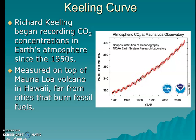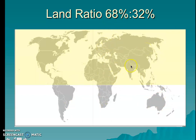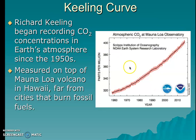Carbon dioxide levels, as Keeling found, were actually decreasing in the spring and summer months, and then increasing during the fall and winter months. We think this is happening because of the Northern Hemisphere and Southern Hemisphere land ratio — 68% of the Earth's land comes from the Northern Hemisphere, compared to 32% from the Southern Hemisphere. During the spring and summer months, when vegetation in the Northern Hemisphere is in full bloom, that's why we see that dip in carbon dioxide levels.